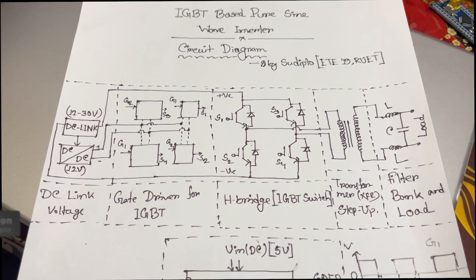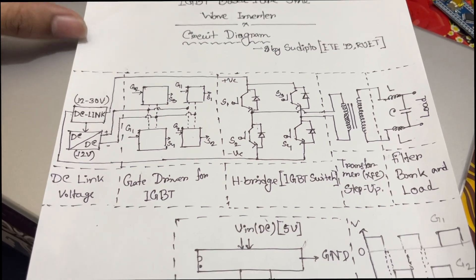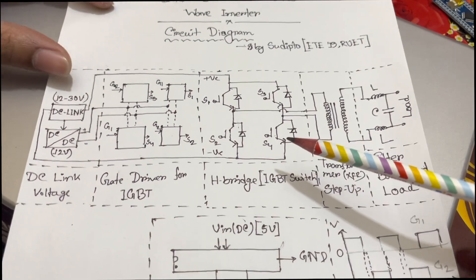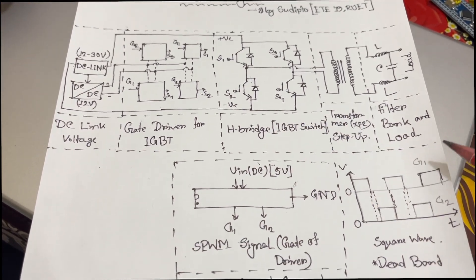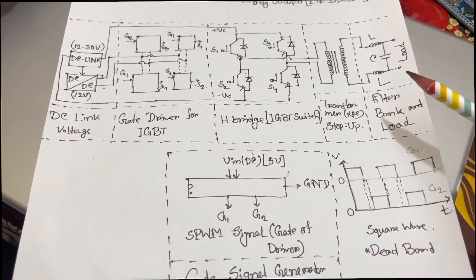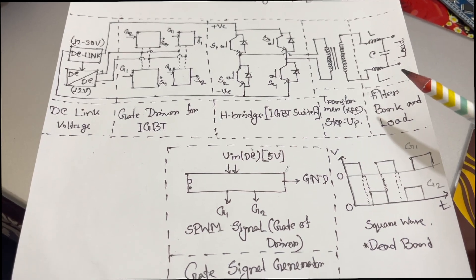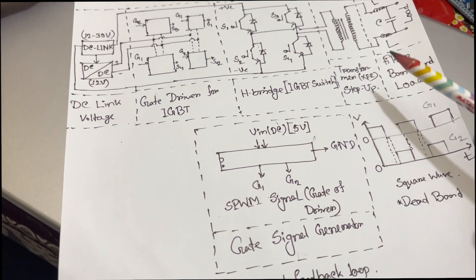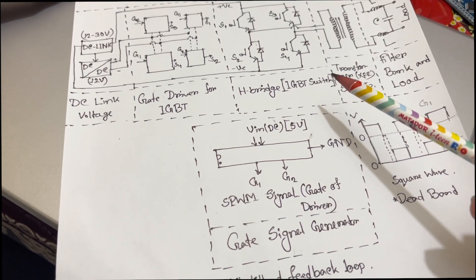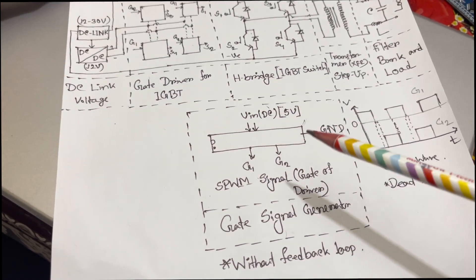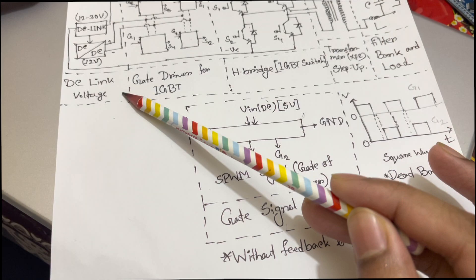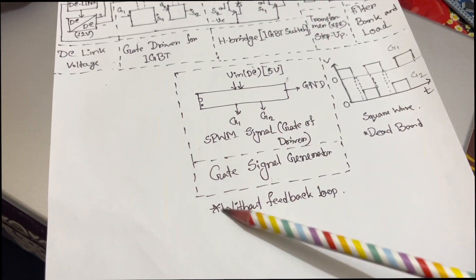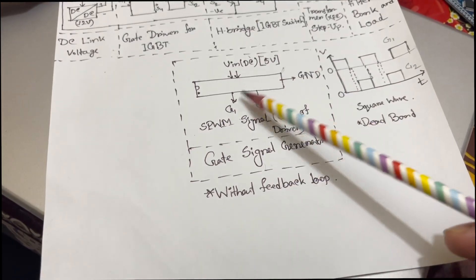So this is a relatively simple circuit diagram for the IGBT-based pure sine wave inverter. This is the actual circuit diagram and the whole construction of my proposed designed inverter. For better understanding, I have chopped the whole circuit into several categories - to be very specific, six categories: the DC supply voltage, the gate driver of the IGBTs, the H-bridge, the transformer, the filter bank, and the gate signal generator.